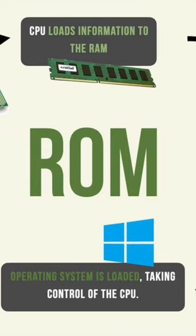ROM stores the instructions for the computer to start up when it is turned on again. It repeats this process every time the computer shuts down or restarts. This process can take anywhere from 5 to 30 seconds, sometimes even a minute, depending on the computer and the hardware that's installed inside of it.